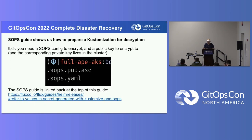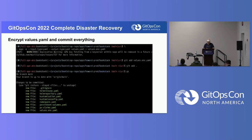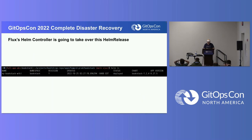We're going to have secrets in a values.yaml file, so that means we need to encrypt it, and that means we need a SOPS configuration. If you follow that link, it has information connected to the SOPS guide in Flux to tell you how to set up SOPS from scratch with Flux. We follow the guide and commit everything to Git. Flux's Helm controller is going to take over this release, and if we've lined everything up correctly you should see Helm controller taking over the Helm release. You should have Flux bootstrapped already at this point.